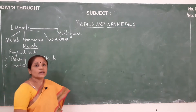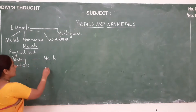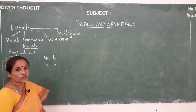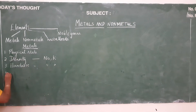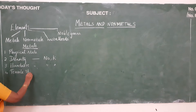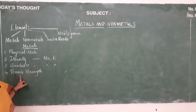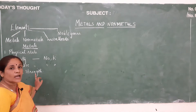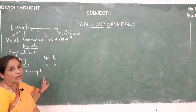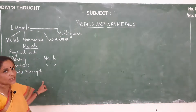Metals are generally hard, and here also there is an exception — sodium and potassium are soft metals, they are not hard in nature. The next property is tensile strength. Metals possess high tensile strength, and there is an exception: zinc, arsenic, and antimony are elements which possess low tensile strength.